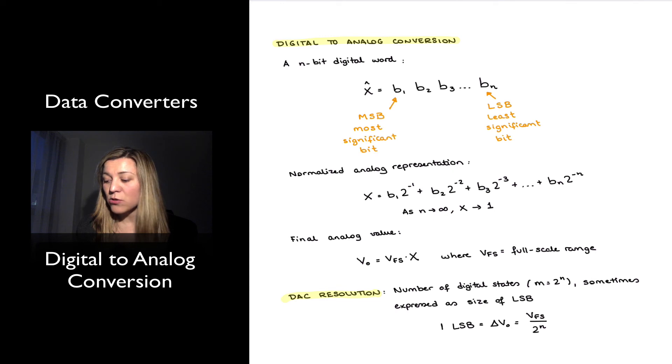Also notice that as n goes to infinity, meaning as the number of bits in my system increases, the maximum value that x signal can take is equal to 1, because it's a normalized analog representation. So my last step is to figure out how do I go from a signal that is basically ranged from 0 to 1, how do I expand it or stretch it to its full-scale range? And the way I do that is multiplying the x signal, the normalized analog signal, times the full-scale voltage.